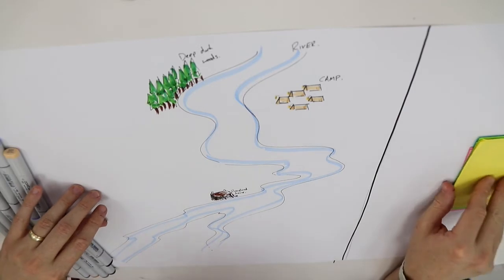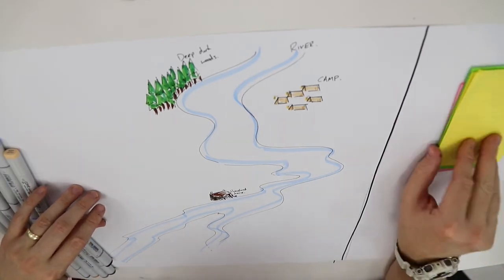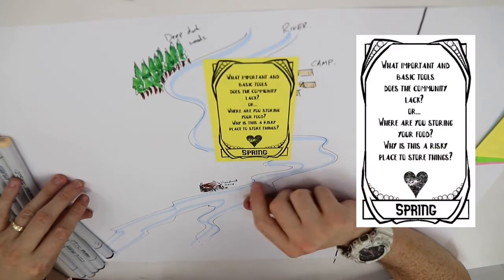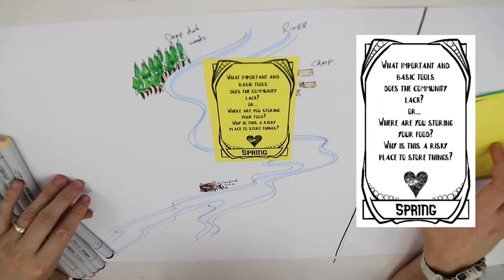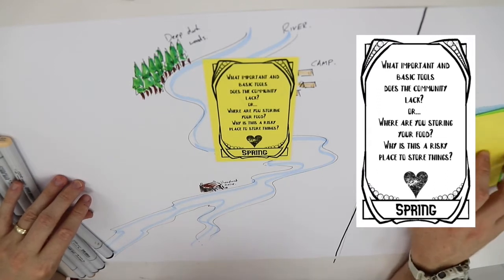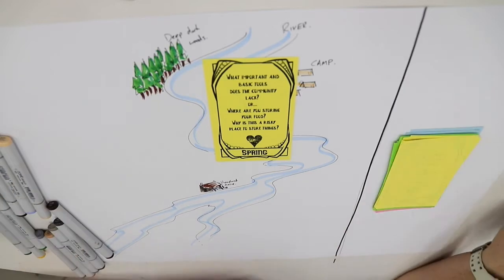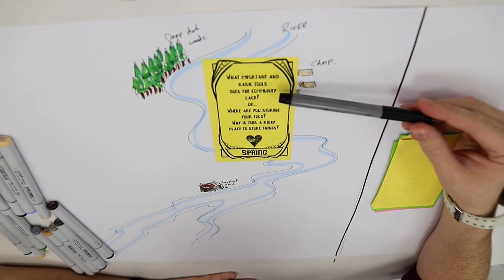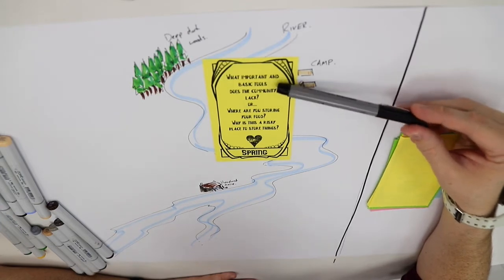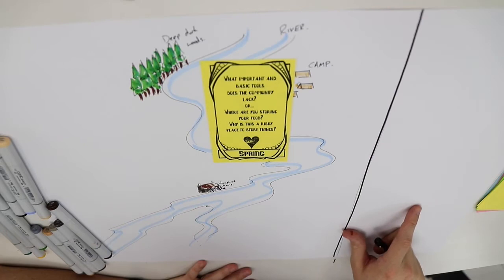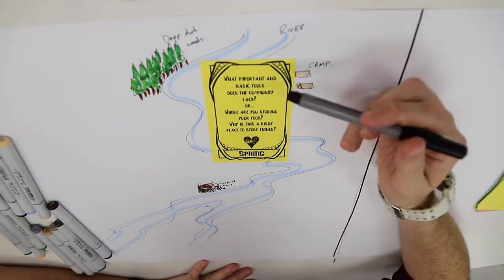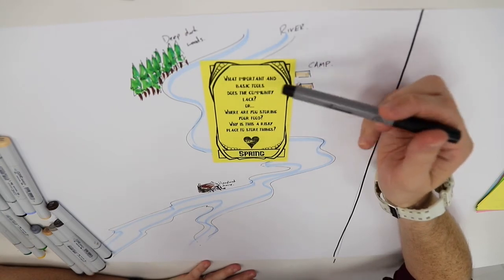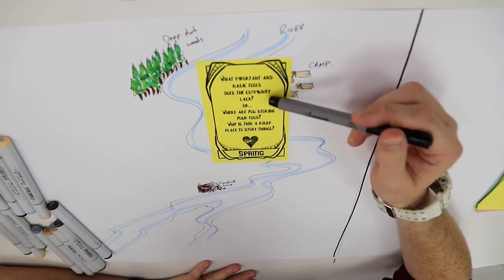So we start with spring. From the yellow cards, I'm going to flip over the top one. "What important and basic tools does the community lack, or where are you storing your food, why is this a risky place?" On almost all of the cards what you'll find is a decision to make - you will have two different prompts. We're also going to record what happens down here.